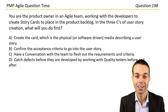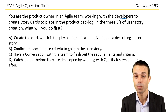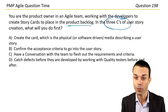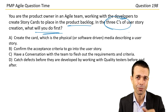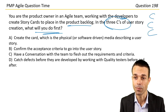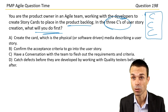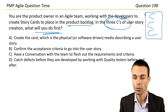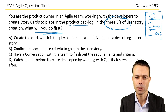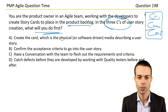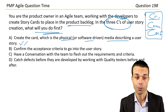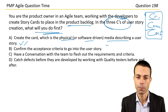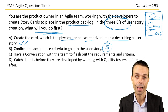You're the product owner in an Agile team, working with developers to create story cards for the product backlog. In the three Cs of user story creation, what do you do first? The three Cs are: card, conversation, and confirmation. Create the card — the physical or software-driven media describing a user story — that sounds promising. Confirm the acceptance criteria will probably be last, once everything is gathered together.